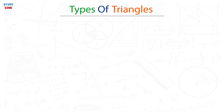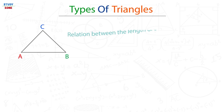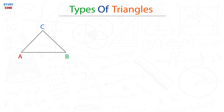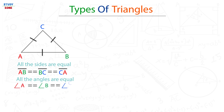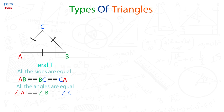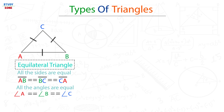Now that we know what a triangle is, let us look at the types of triangles. The first classification is based on the relation between the lengths of the sides. The first type is where all sides of the triangle are of equal length. In this type, all angles are also equal — angle A equals angle B equals angle C. This type of triangle is known as an equilateral triangle.